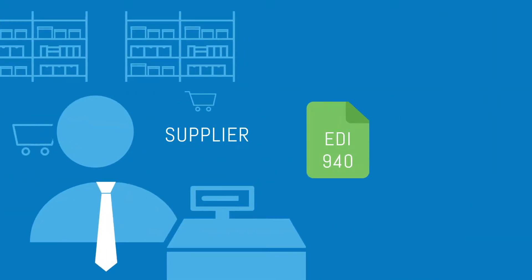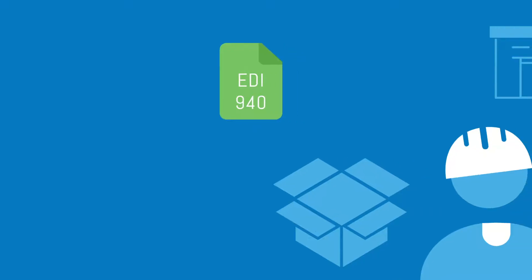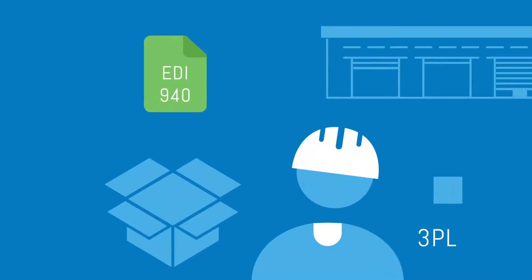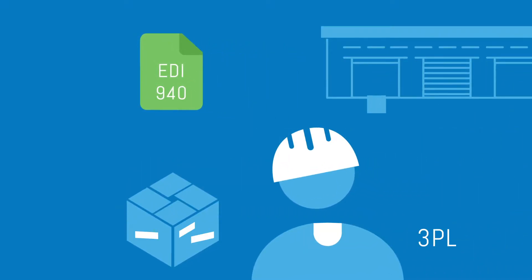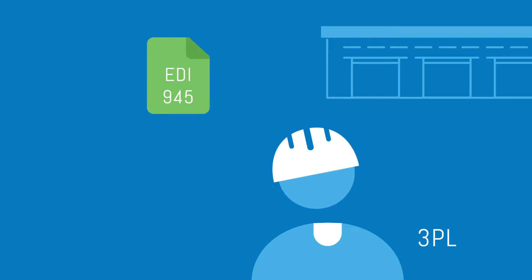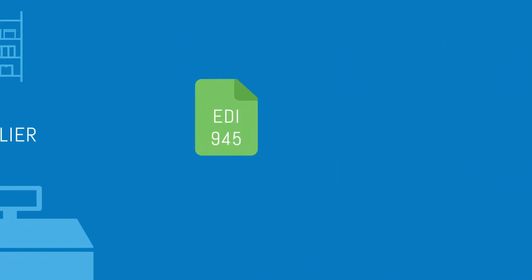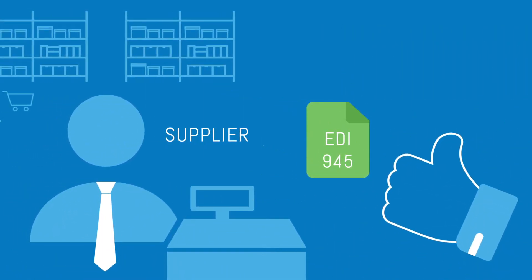The 940 from a supplier lets a 3PL know what product to pull and when and where it must be delivered. Once the delivery has been made, a 3PL sends a 945 back to the supplier as confirmation that the goods made it to their destination.